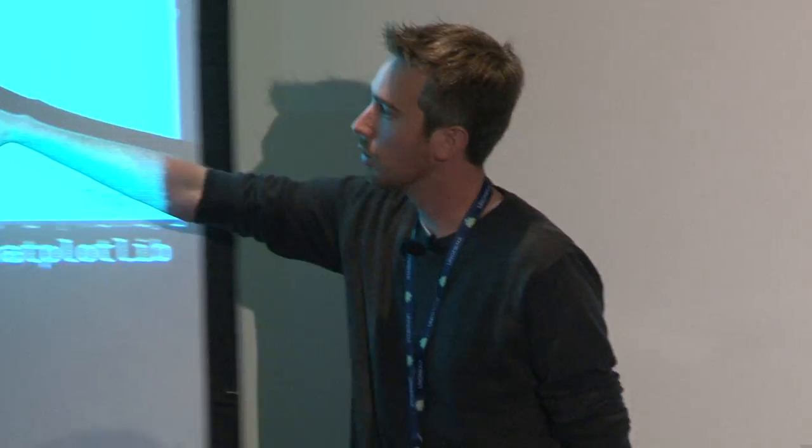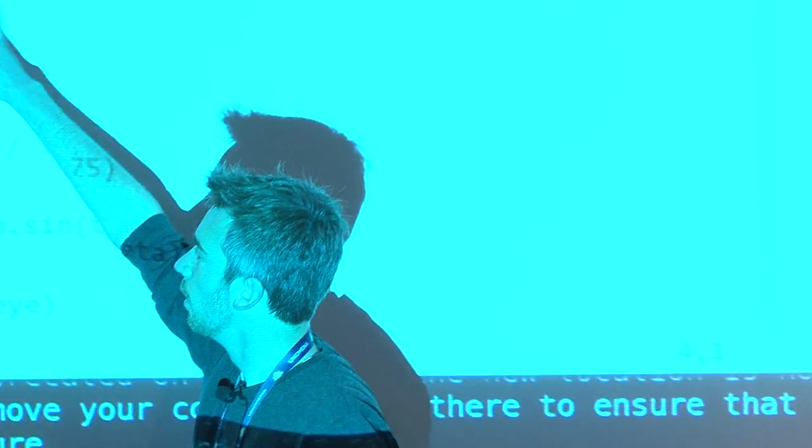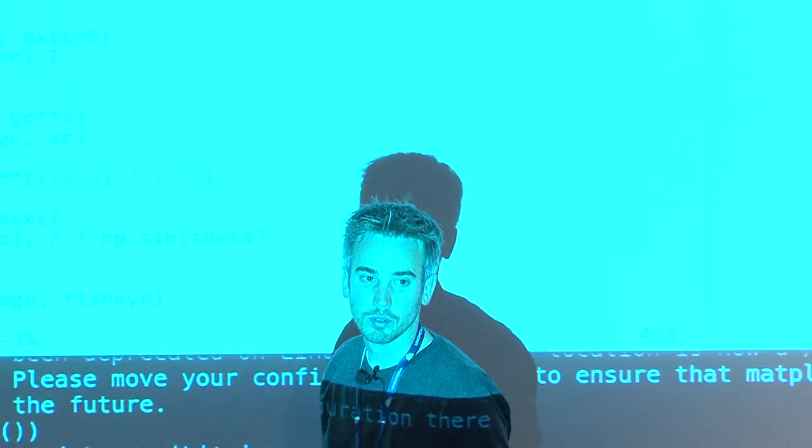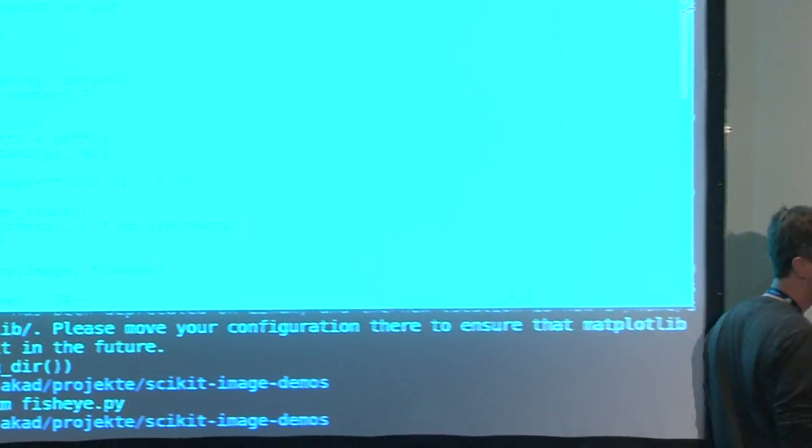Here's Lena with a fisheye transform applied. You just import the libraries, define your transformation function, and ask scikit-image to move all the coordinates for you. The whole code is just a few lines.